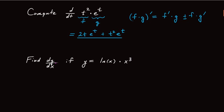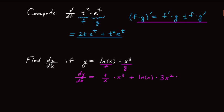Let's look at some more examples. In this example, I want to find dy/dx, and I know that y is equal to ln of x times x cubed. So I'm going to apply the product rule again. I take the derivative of f — the derivative of ln of x is 1 over x — then multiply that by g, which is x cubed. Then I add f without differentiating it, times the derivative of g. The derivative of g is 3x squared by the power rule. So: derivative of f times g, plus f times the derivative of g.